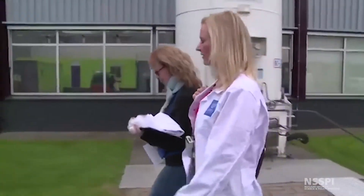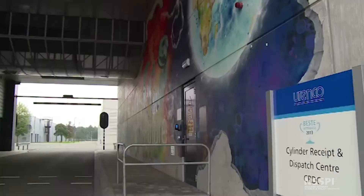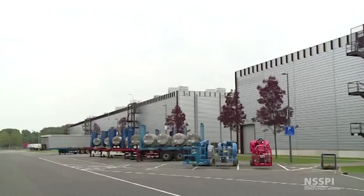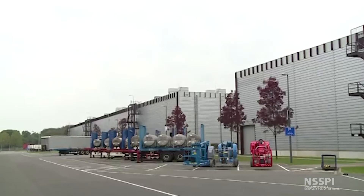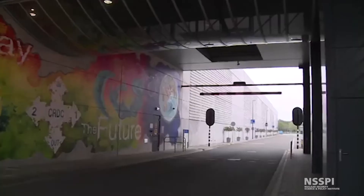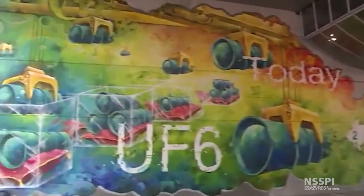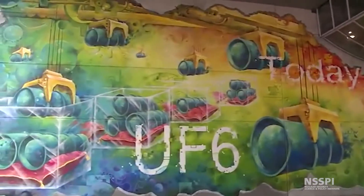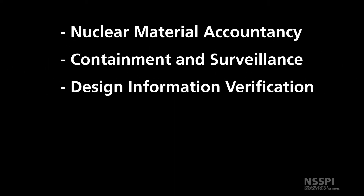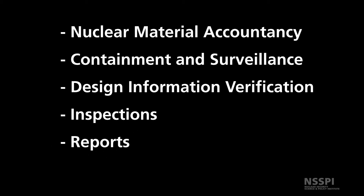Now let's take a look at how some of the different safeguards strategies can be applied to detect hypothetical diversion. Remember that the full suite of IAEA safeguards measures will be used. These include nuclear material accountancy, containment and surveillance, design information verification, inspections, and reports.